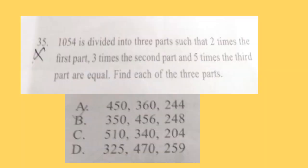Question 35: 1054 is divided into 3 parts such that 2 times the first part, 3 times the second part, and 5 times the third part are equal. Find each of the 3 parts. Correct answer is option C. 2 times 510 will give 1020, 3 times 340 will also give 1020, and 5 times 204 will give 1020. These all are the same, so option C is the correct answer.